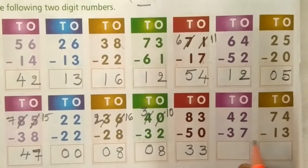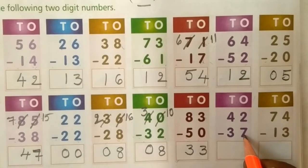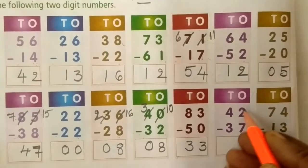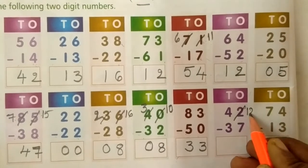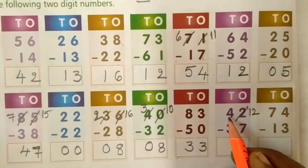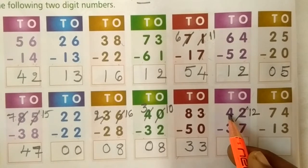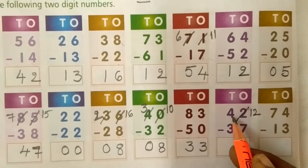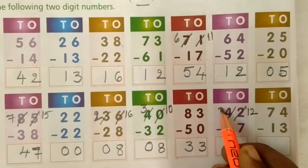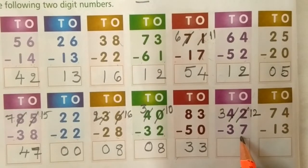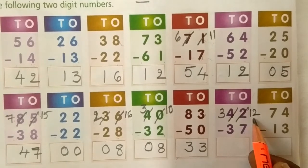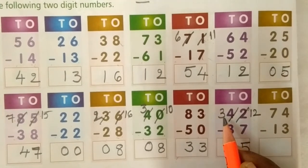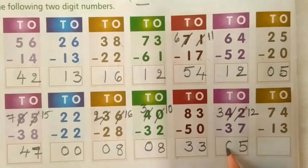Next: 42 minus 37. Here, 2 minus 7 is not possible. What do you have to do? Borrow from the 10's place to the 1's place. Cut off 2 and write down 12. Because if you borrow 1 from the 10's place, its value is 10, so 10 plus 2 is 12. Then 4 minus 1 is 3. Backward counting: close all fingers, count after 7 up to 12. Answer is 5. Take 3 fingers, close 3 — answer is 0.